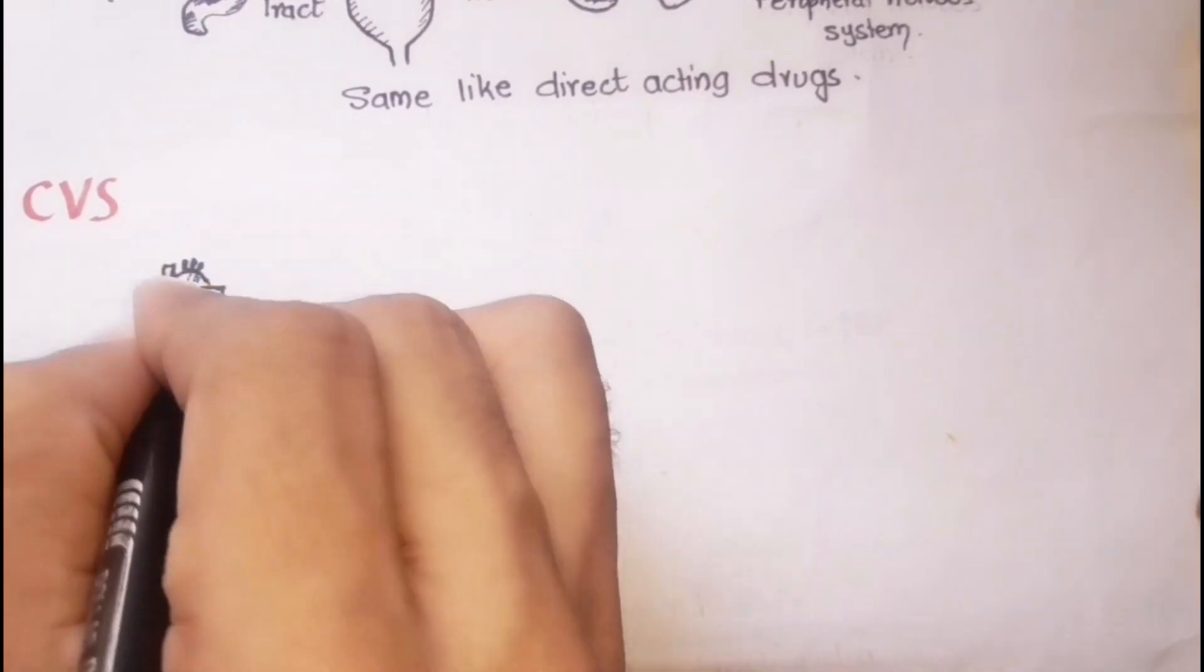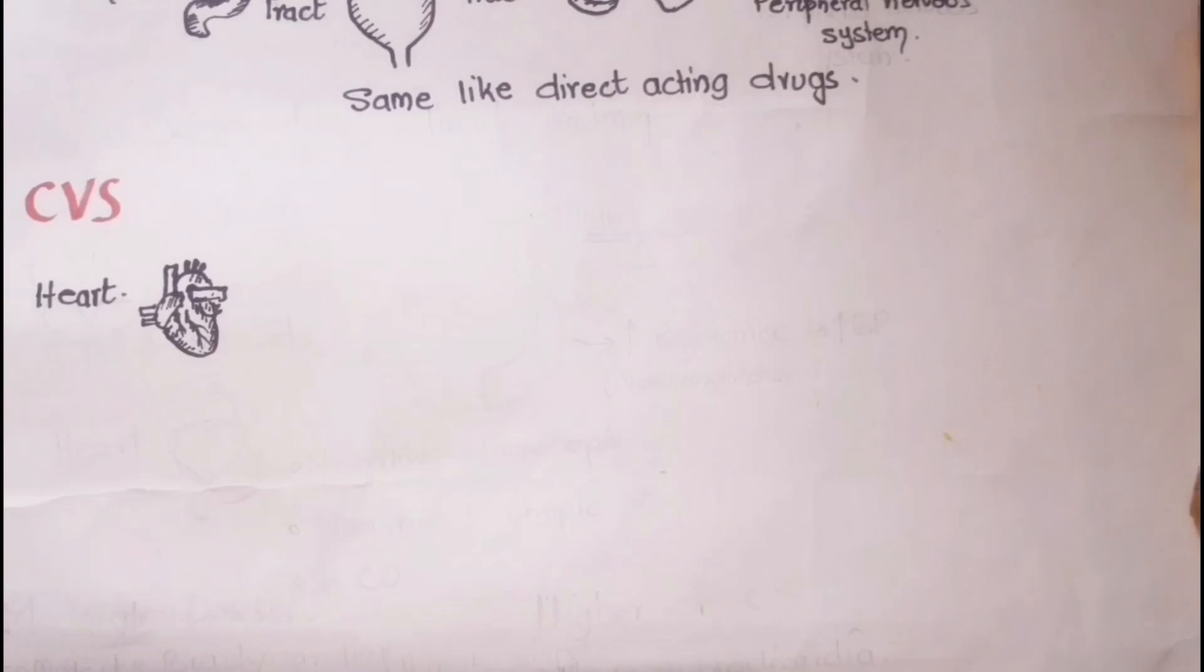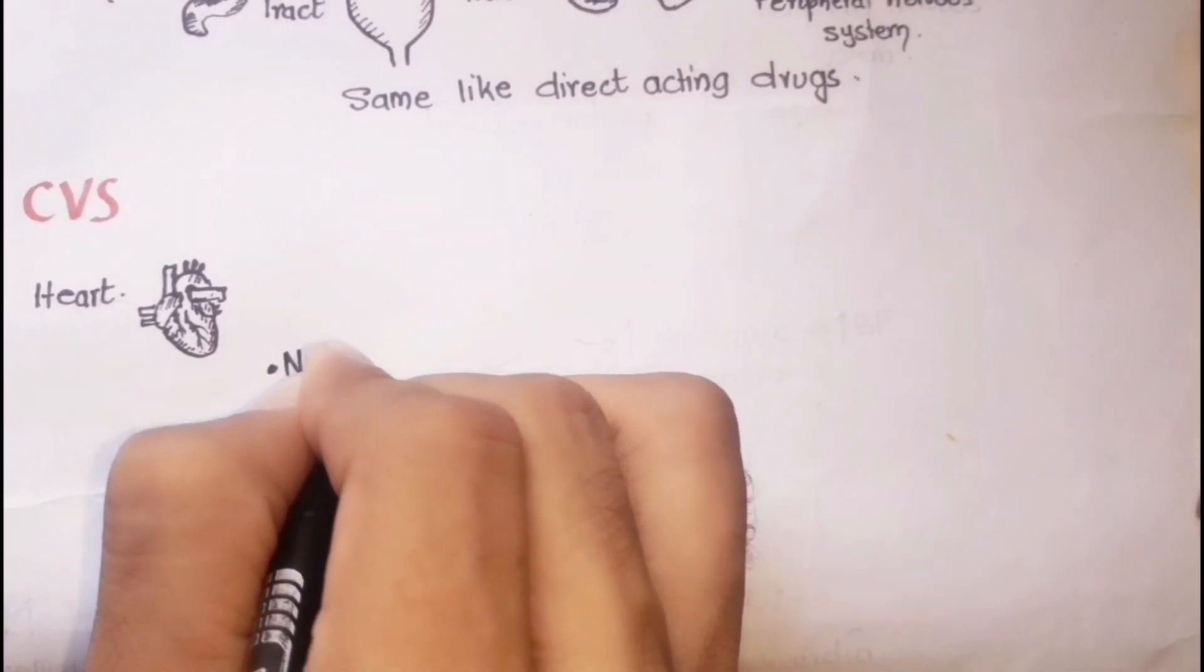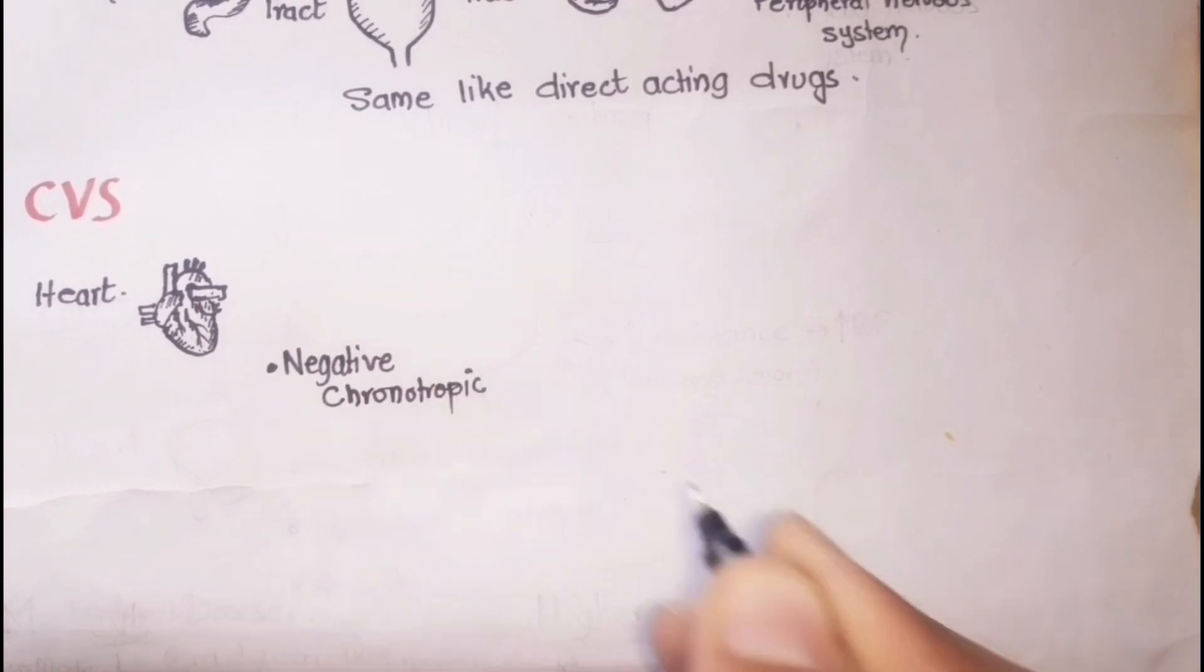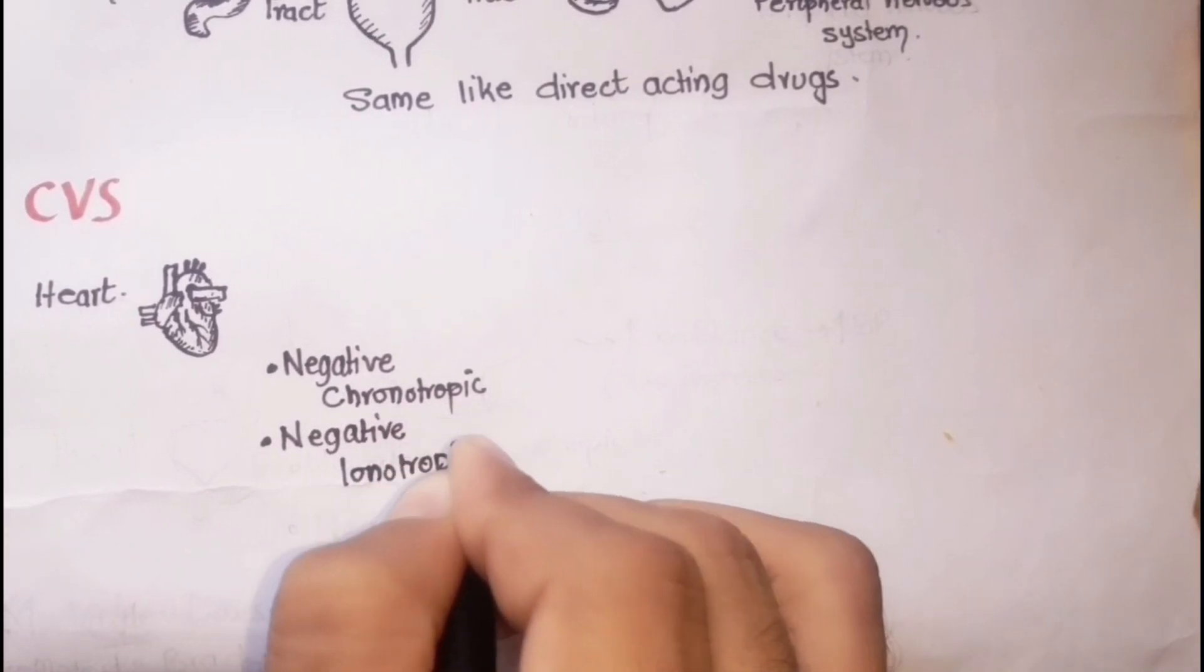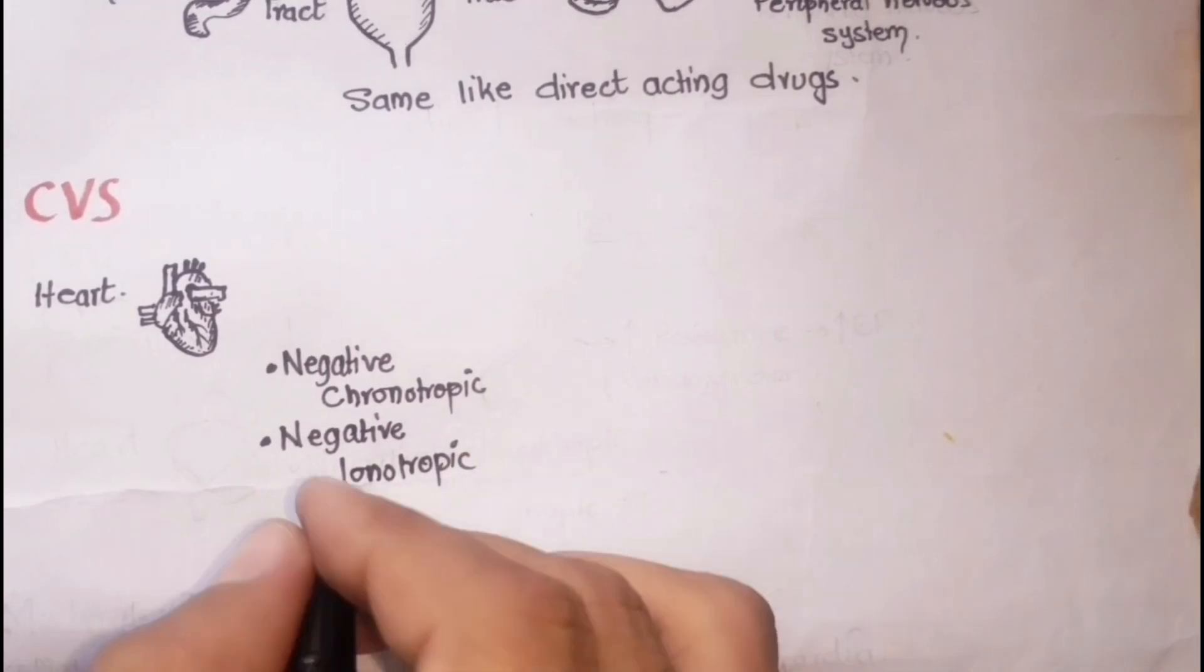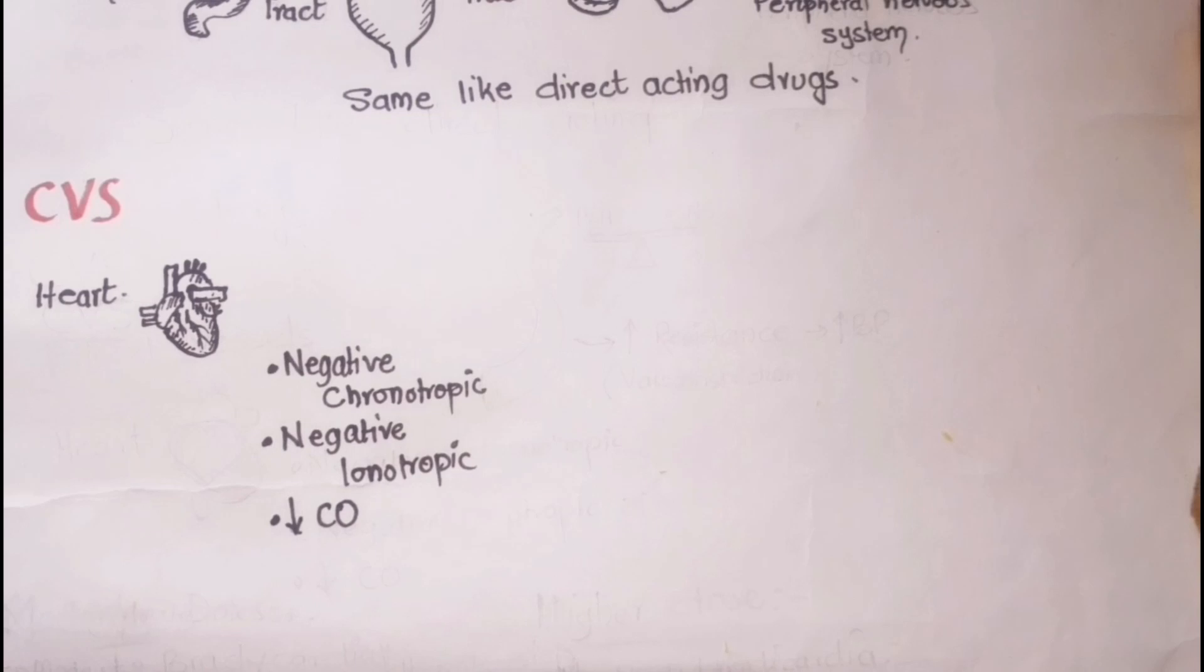Parasympathetic effects are predominant in the heart and these include negative chronotropic effect, that is decreased heart rate, and negative inotropic effect, that is decreased cardiac contractility and subsequently decreased cardiac output.